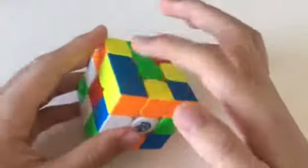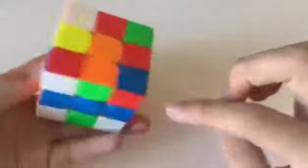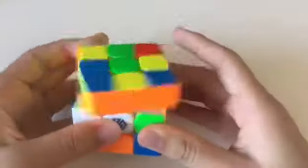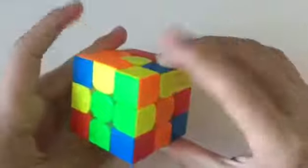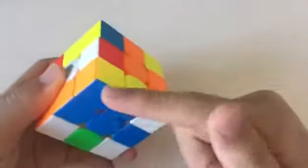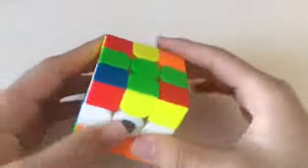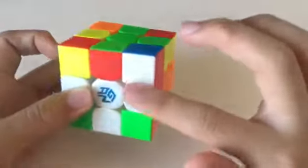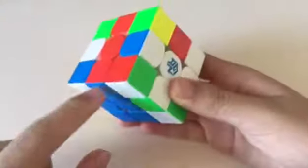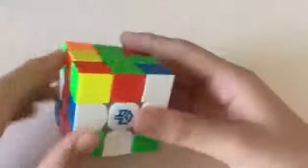So first, this block, this edge, and setting up this corner and this edge. Like so, block edge, pair, now we have this cross edge, this is also solved, I mean this pair, this is solved.